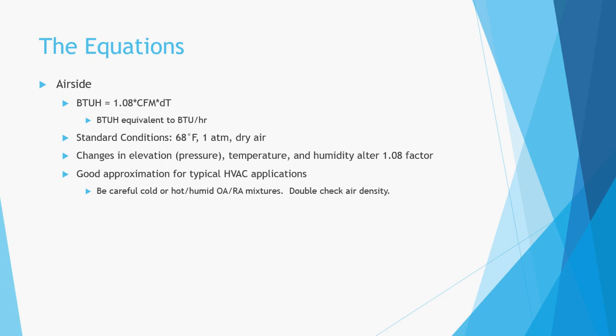So let's look at this equation. The BTUH is the sensible load. CFM is cubic feet per minute, which is the airflow. Delta T is the change in temperature of the air. The 1.08 factor is derived from standard conditions, which is dry 68-degree air at atmospheric pressure at sea level.